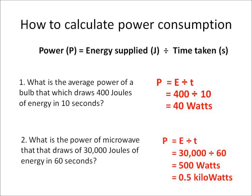Here's another one: what's the power of a microwave that draws 30,000 joules of energy in 60 seconds? That is P equals E divided by T equals 30,000 divided by 60, which equals 500 watts, or 0.5 kilowatts.